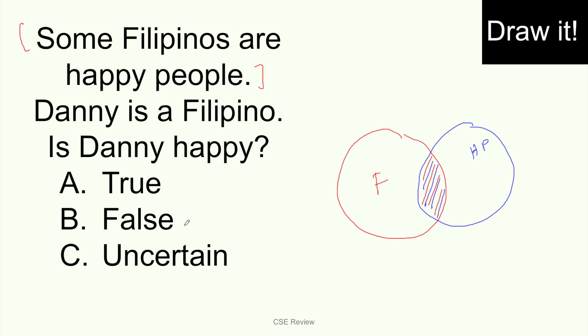Ngayon, ano yung ibang sinabi dun sa problem? Ang sabi, Danny is a Filipino. So kung Danny is a Filipino, what does that mean? Kung Danny is a Filipino, nasa loob siya ng bilog na F. Pwede siya dito? Pwede rin siya dito? Tama? Bakit? Kasi nasa loob pa rin naman to ng bilog na F. Kasi itong buong bilog na yan ay F. Pero kung sasabihin mo na, is Danny happy? Are you 100% sure na happy ba siya? Not really. Kasi may mga Filipino na hindi happy. Ngayon, pag sinabi na false, is it false? No, not really, kasi meron ngang possibility na si Danny ay happy. Kasi Filipino siya. Kasi may ibang Filipino na happy din. So the answer becomes letter C, uncertain.